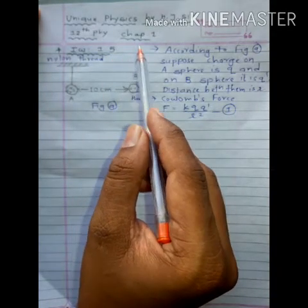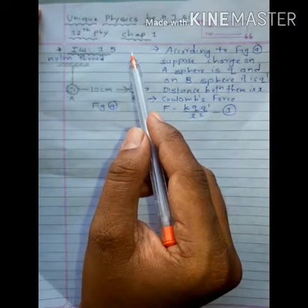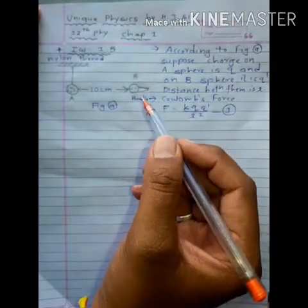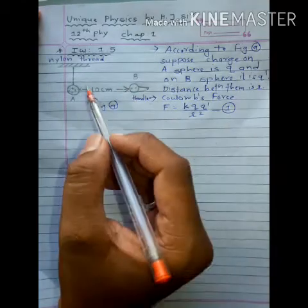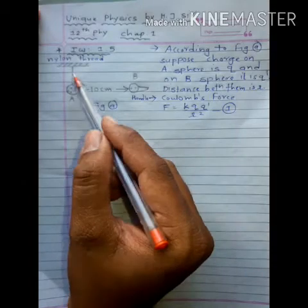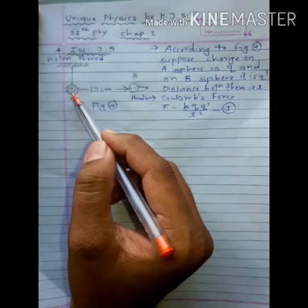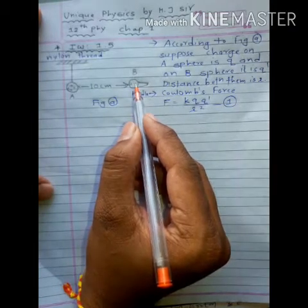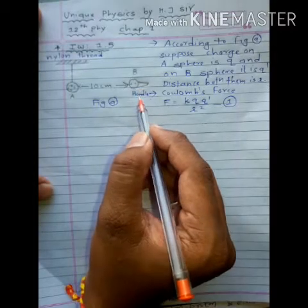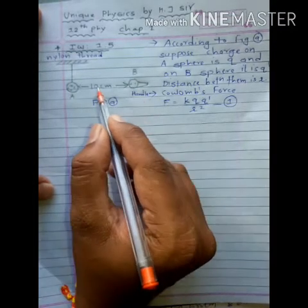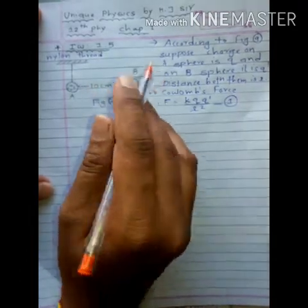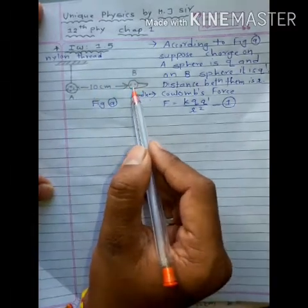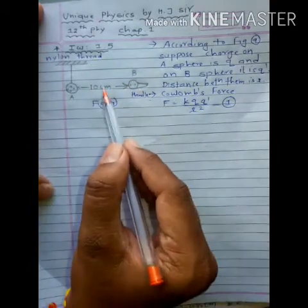This illustration is based on the contact method of charging and Coulomb's law. In the first situation given in the question: a charged metallic sphere A is suspended by a nylon thread. Another charged metallic sphere B, held by an insulating handle, is brought close to A such that the distance between their centers is 10 cm.